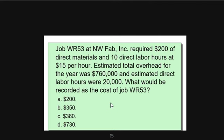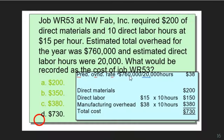For Job WR53 at NWFAB Inc.: the job required $200 of direct materials and 10 direct labor hours at $15.00 per hour. Estimated total overhead for the year was $760,000 and estimated direct labor hours were 20,000. What would be recorded as the cost of Job WR53? Direct materials: $200; direct labor: $15 × 10 = $150; manufacturing overhead: $38 × 10 = $380. Total cost is $730. The answer is letter D.